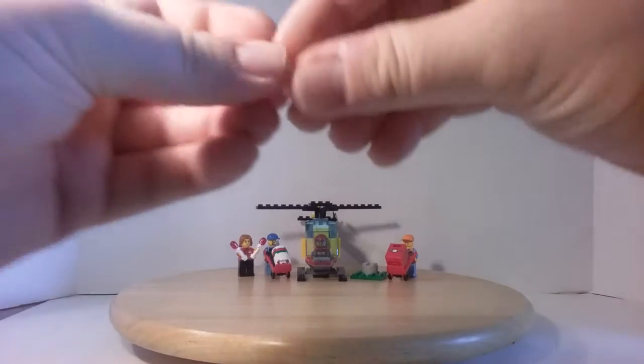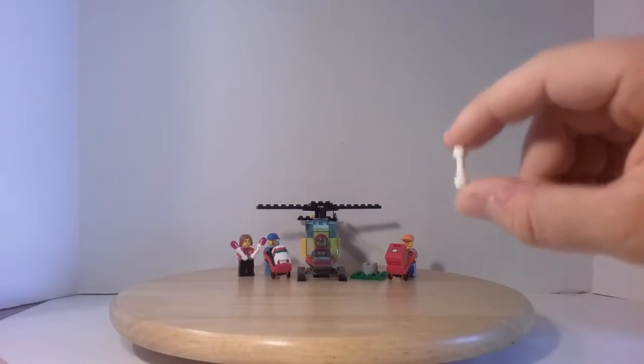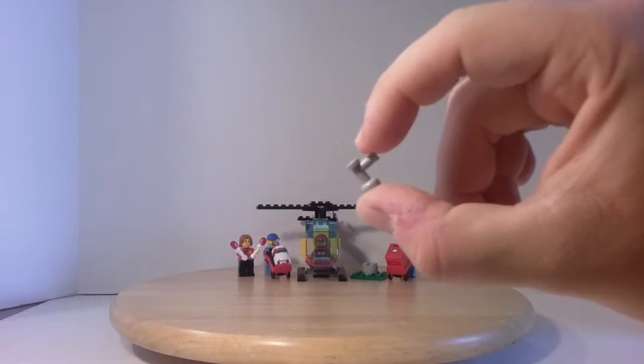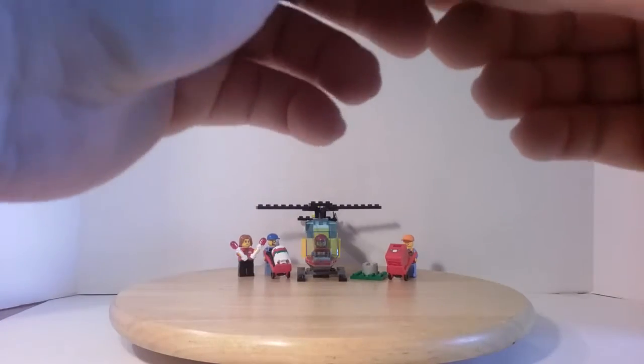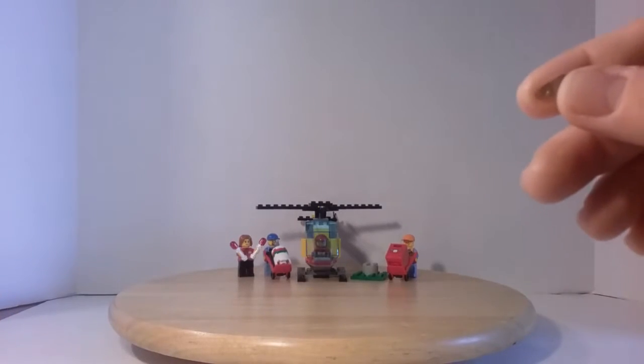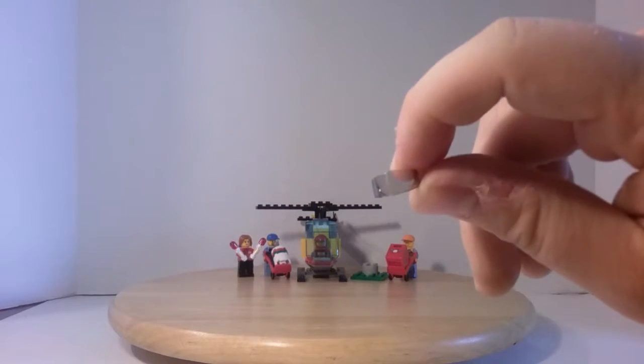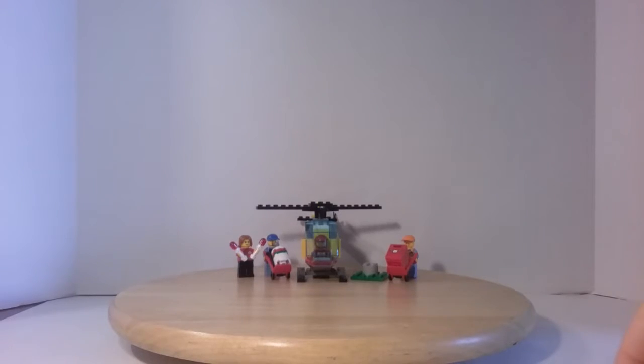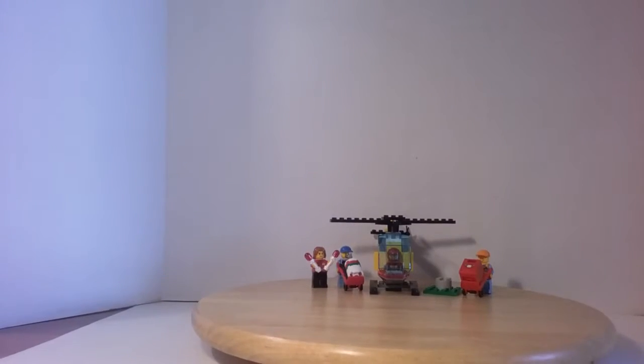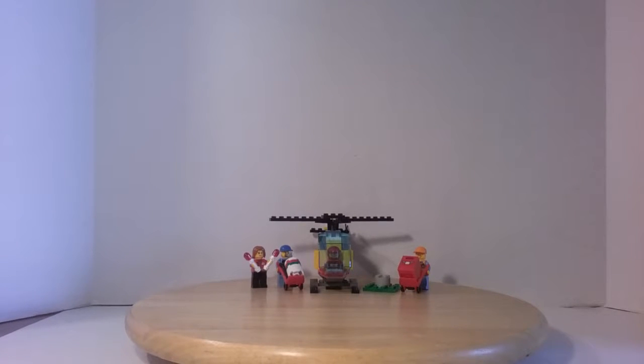Then for extra pieces we get a lightsaber hilt in the white color, a light bluish gray tap piece, and a helmet visor or visor screen, whatever it is called, in the black, trans black color. And I believe that is it for the extra pieces. Sorry for bumping the camera.